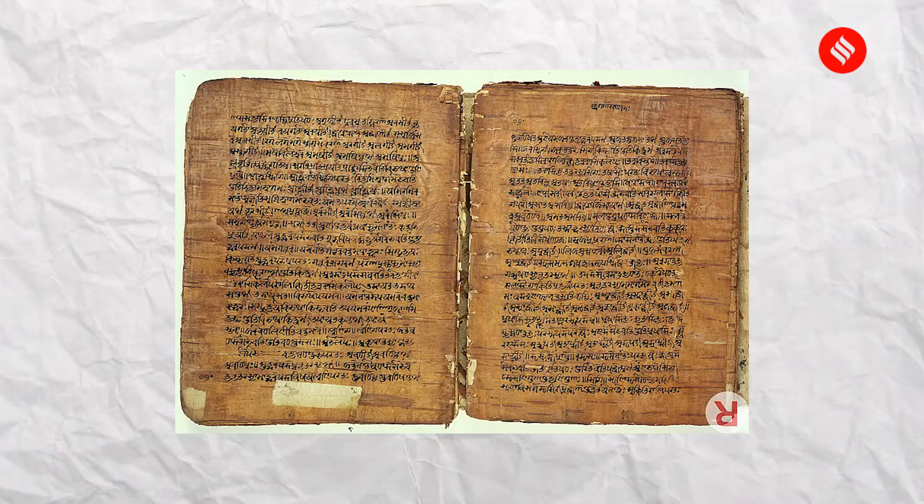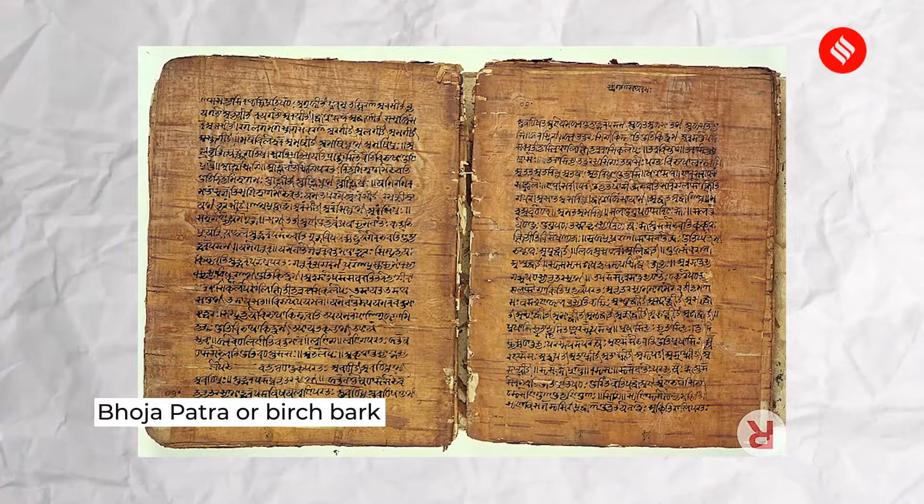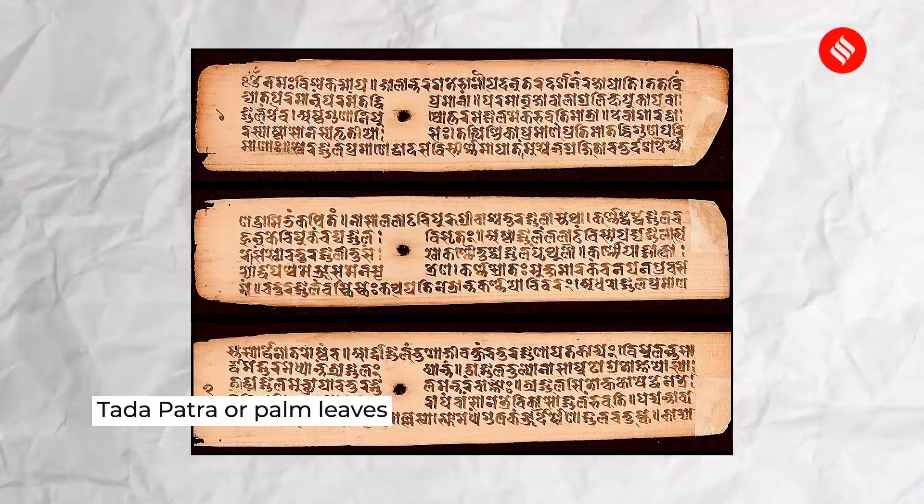In India, they could have used leather as was done in the Middle East — the earliest Quran was written on leather — but in India leather was considered inauspicious, so people preferred plant products. In North India they used bhojapatra, the bark of the birch tree. In South India they used tadapatra, the palm leaf. So palm leaf and birch bark were the key writing materials.